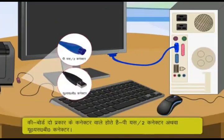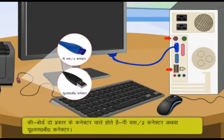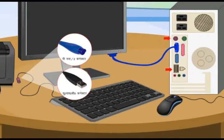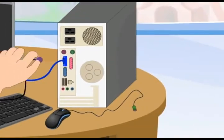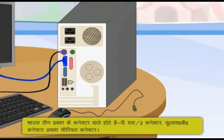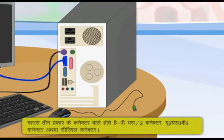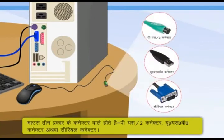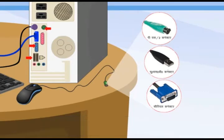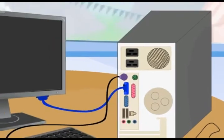Keyboard comes with two types of connectors: PS/2 connector or USB connector. Keyboard को connect करने के लिए उसके connector को system के उपयुक्त port में जोड़ा जाता है. Mouse तीन प्रकार के connector वाले होते हैं: PS/2 connector, USB connector, अथवा Serial connector. Mouse को connect करने के लिए उसके connector को system के उपयुक्त port में जोड़ा जाता है.